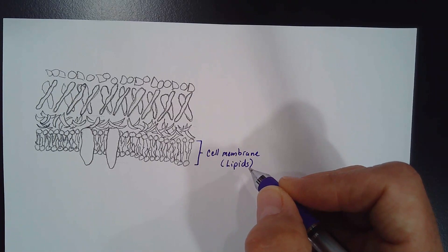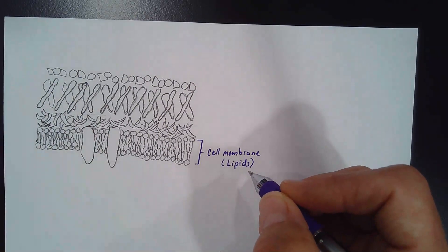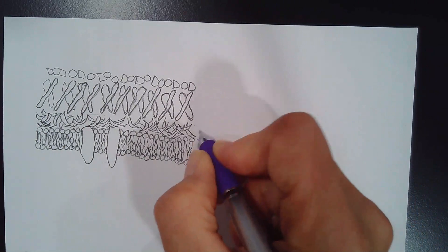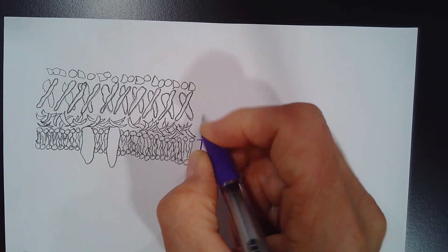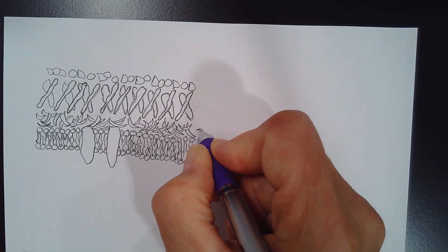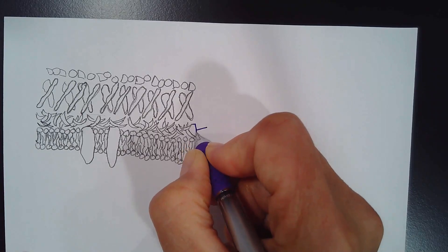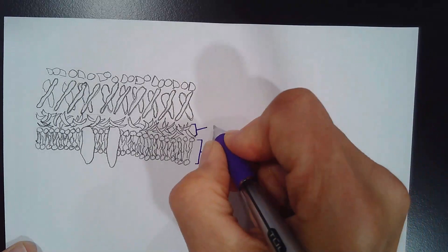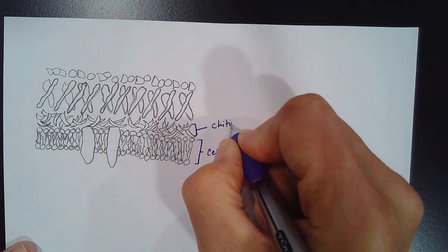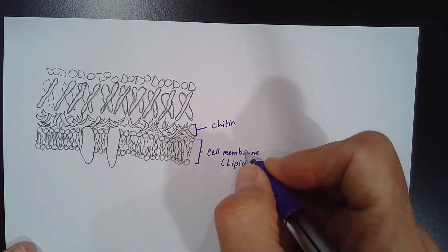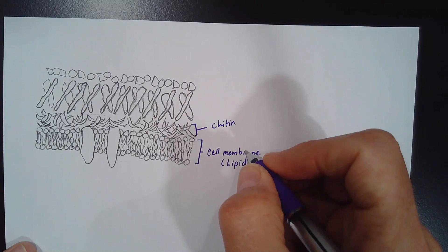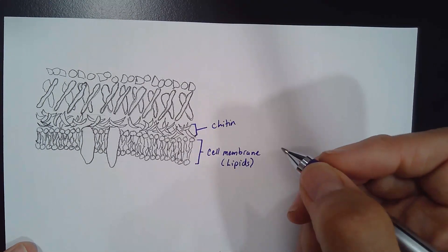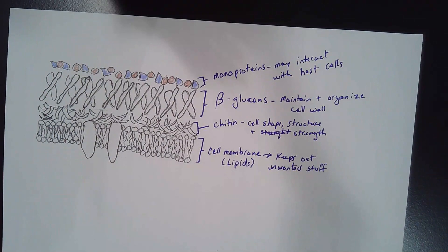Something that's kind of unique to funguses is this layer here, and this layer is made up of chitin, C-H-I-T-I-N.